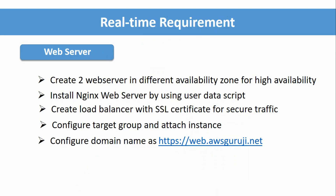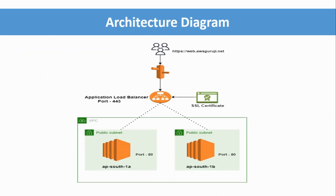All the requirements include creating two EC2 instances with nginx web server installation using a user data script. Then we will create a load balancer with SSL certificate, port forwarding from HTTP to HTTPS — so if someone types the website URL without HTTPS it will redirect automatically. We will create a target group, attach instances to it, and that target group will be used by the application load balancer.